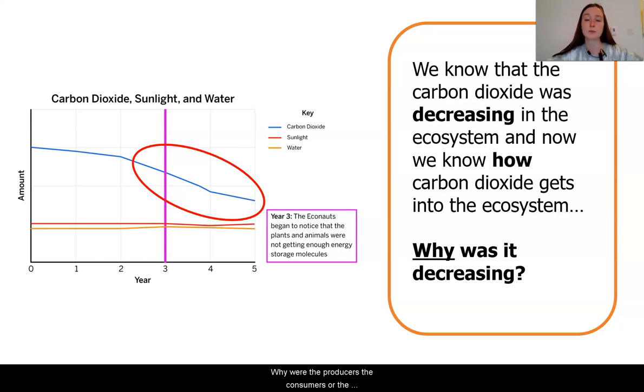Why were the producers, the consumers, or the decomposers not doing cellular respiration as often and causing there to be less carbon dioxide made?